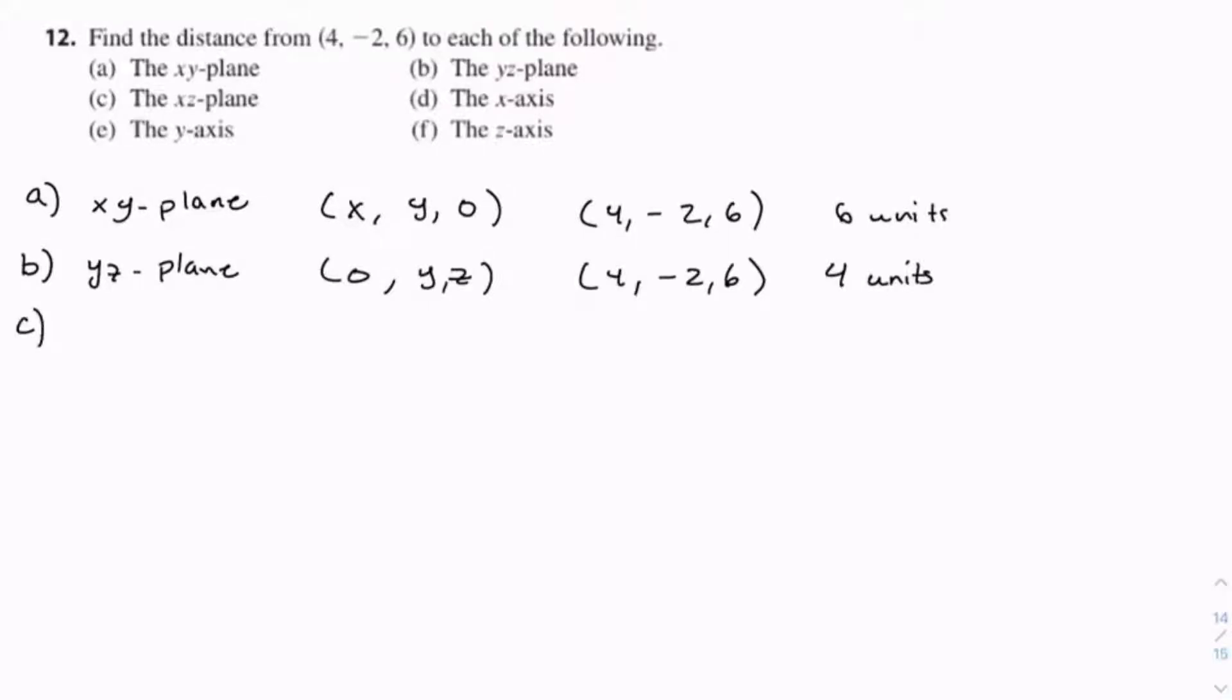For C, we have the xz-plane, which happens when y is 0. x and z can equal anything. If we compare to our original point, just like before, the x and z components do not matter, so we just compare to the y. And since -2 is 2 away from 0 - when I say 2 away, I'm referring to the absolute value or magnitude because distance can't be negative - we have 2 units.